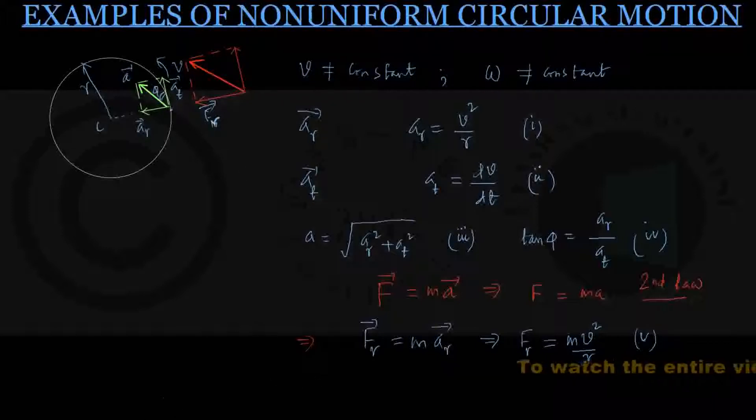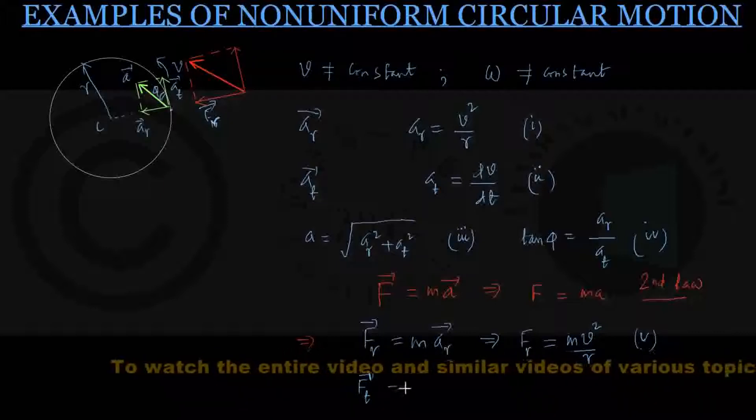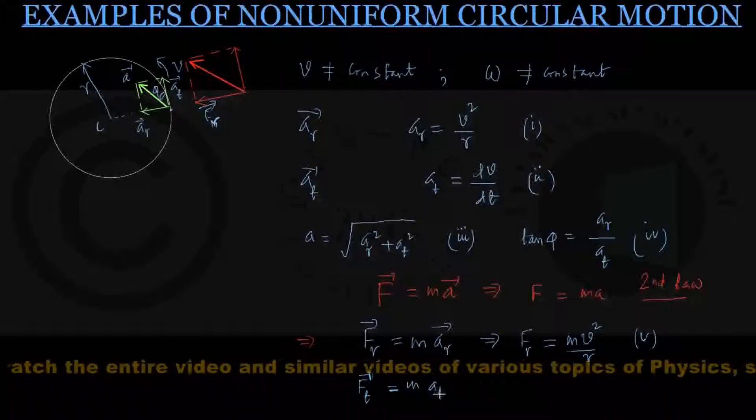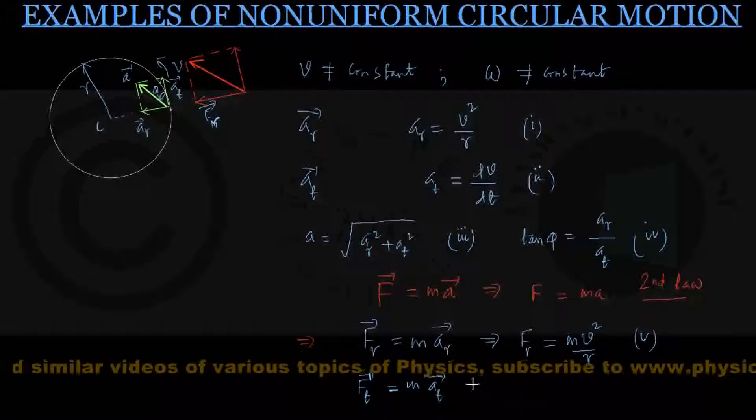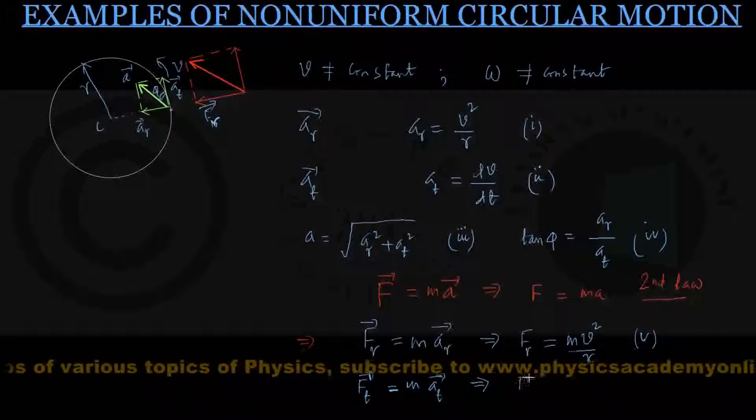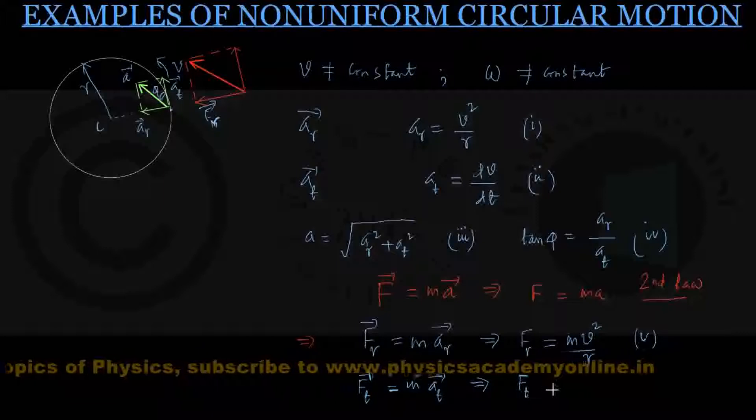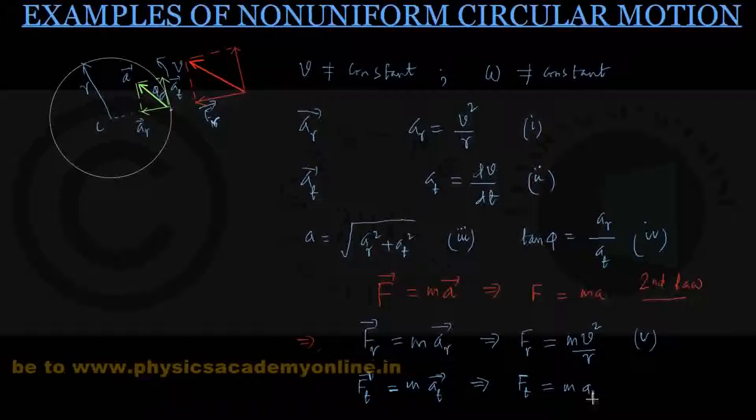Similarly, I could go forward and can write down that FT, a tangential force, must be here in play, and that must be accounting for the mass into tangential acceleration AT. It's all the result of Newton's second law. So in scalar format, I could write down that FT is equal to m into AT. And that is coming out to be m into dV/dt, that is the rate of change of linear speed with time. Now that is my equation number 6.